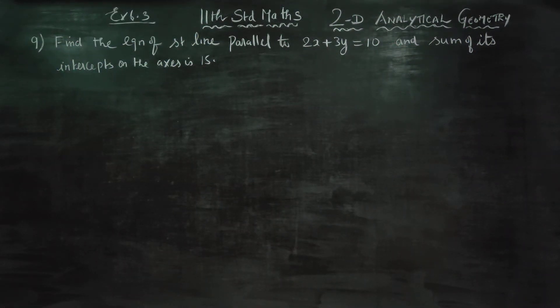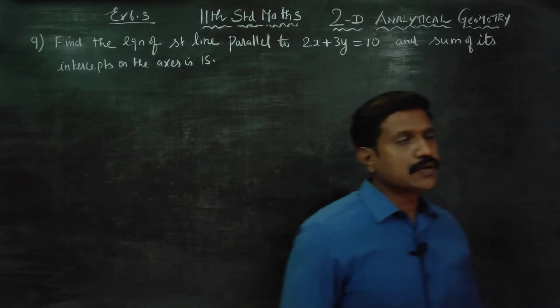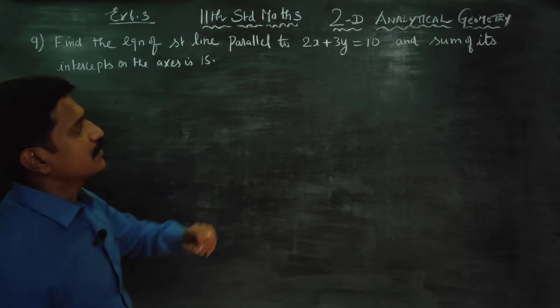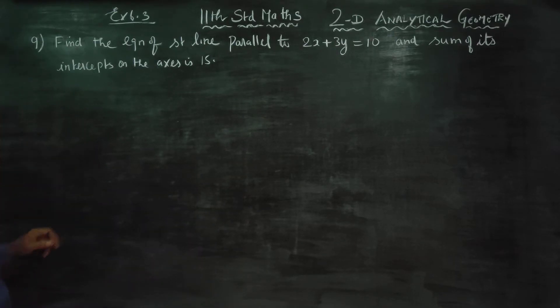Dear Levin Standard students, in exercise number 6.3, sum number 9: Find the equation of the straight line parallel to 2x plus 3y equals 10, and sum of its intercepts on the axis is 15.